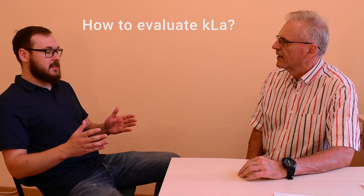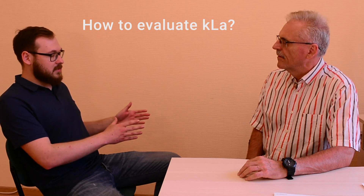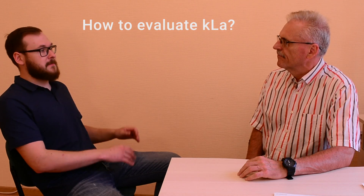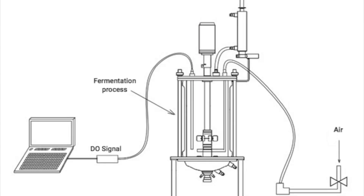The two groups are: theoretical evaluation methods and performing real experiments to determine KLA experimentally. Theoretical KLA evaluation methods are usually applied by bioreactor manufacturers and users trying to scale up their biotechnological process. By using theoretical methods, we can estimate how well the system will perform and what design considerations should be taken into account when constructing the bioreactor.